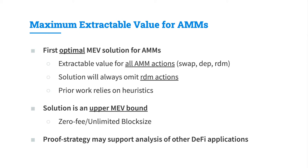In contrast to previous work, our work does not rely on heuristics and represents an optimal solution. We know the solution is an upper bound — an upper MEV bound — meaning it is in the setting of zero transaction fees or zero AMM fees, and we assume an unlimited block size. Nonetheless, it represents a theoretical maximum bound which can be extracted from a given application design, assuming the perfect adversary. We believe the proof strategy can also support analysis of other DeFi applications with similar mechanics.